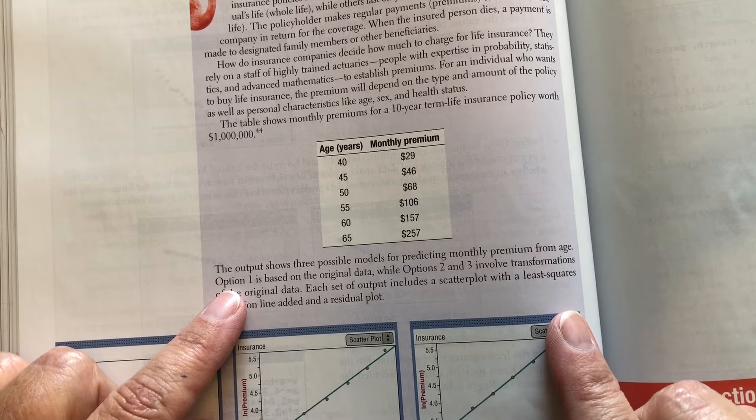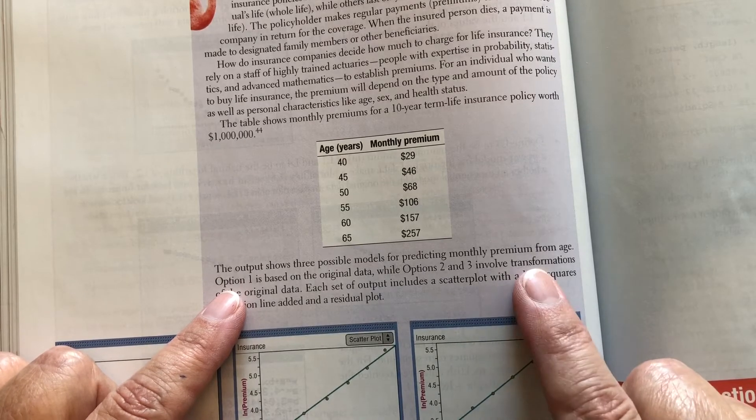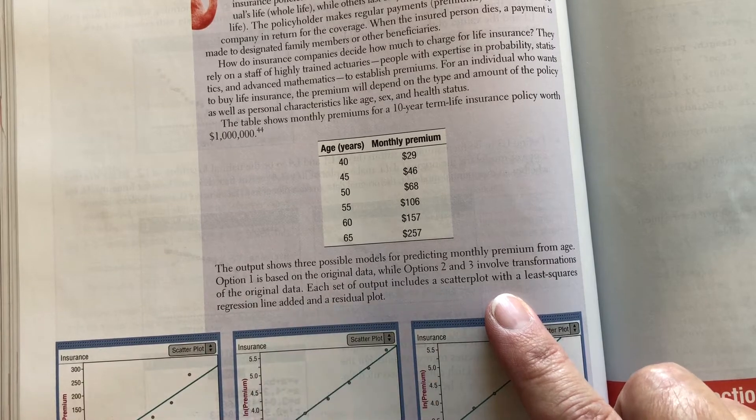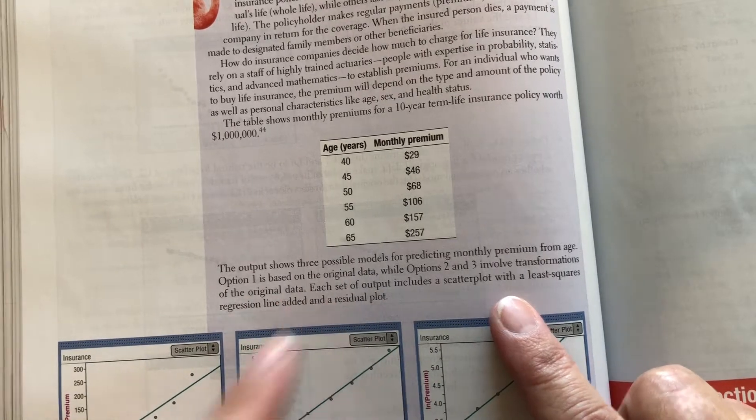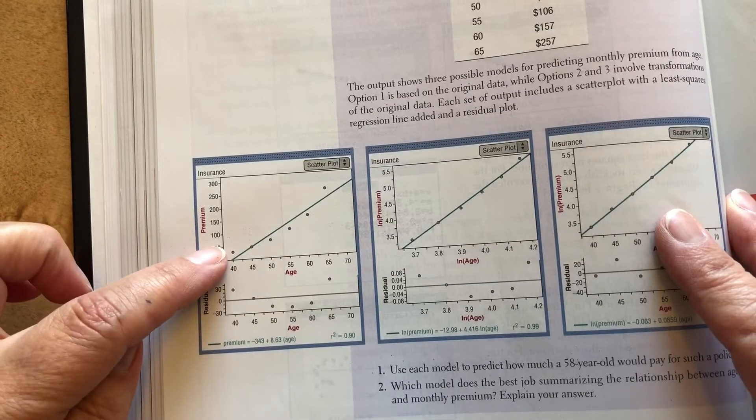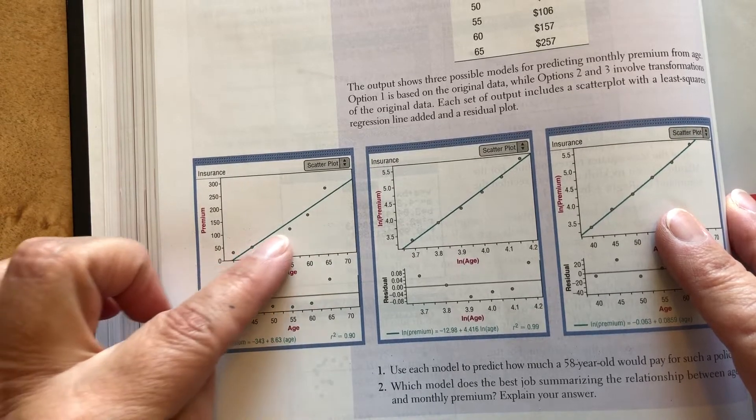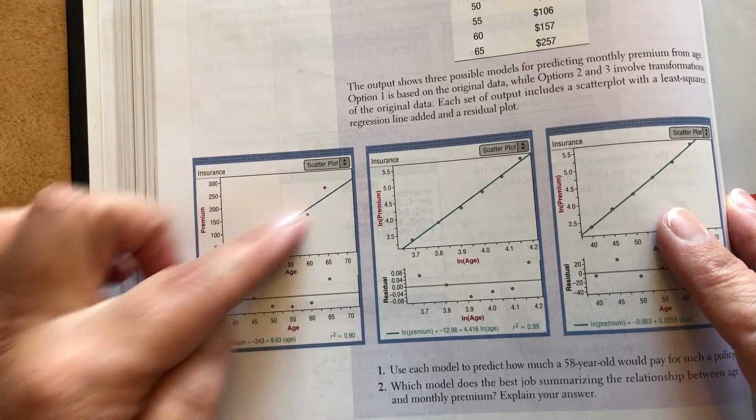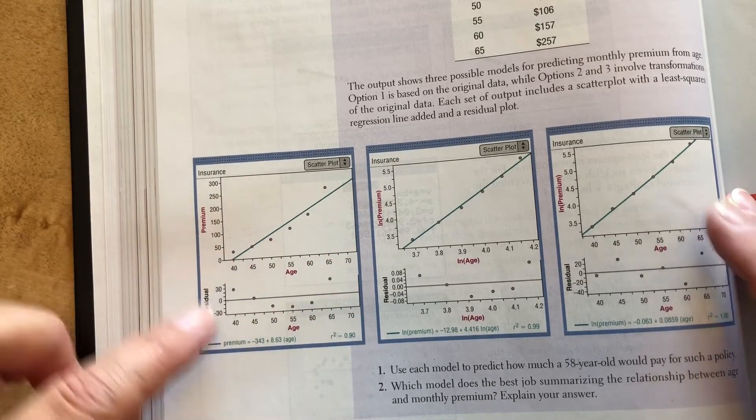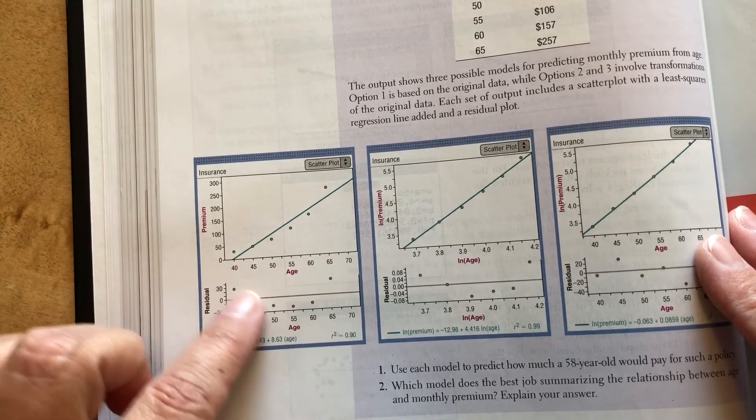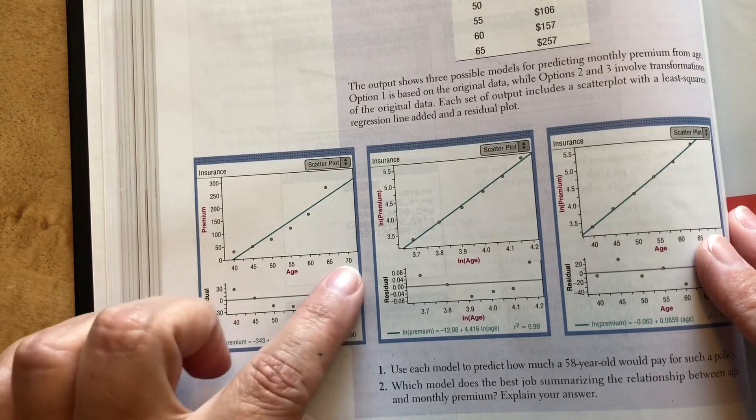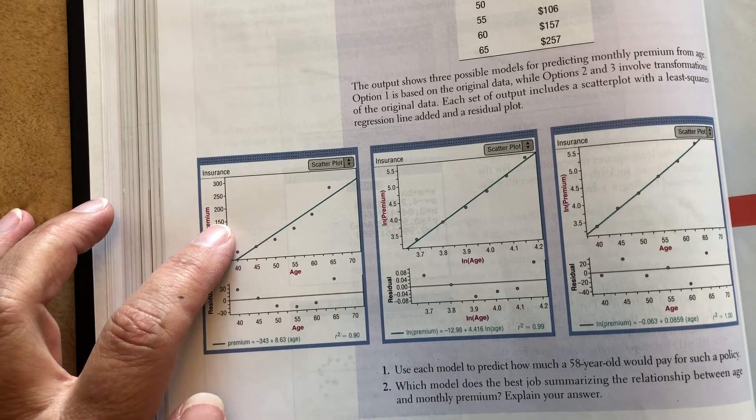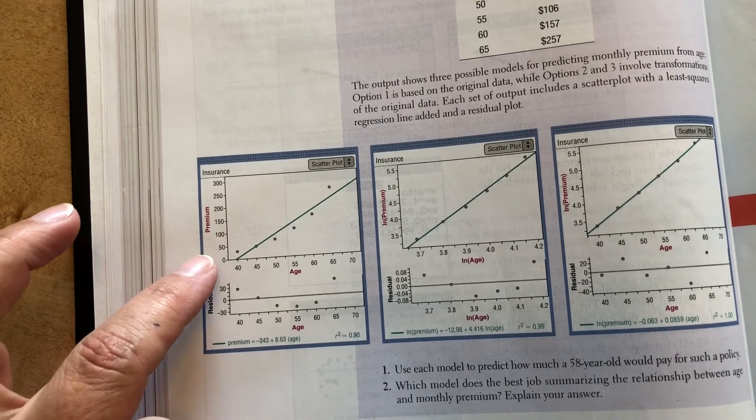The output shows three possible models for predicting monthly premium from age. Option one is based on the original data. So let's look at option one. When we did a scatter plot of age against premium, we saw that it was a bit of a curve. So we can always do a least squared regression line. The residuals look very curved. So since the residuals look curved, this might not be the best model. A linear model might not be the best way to predict.